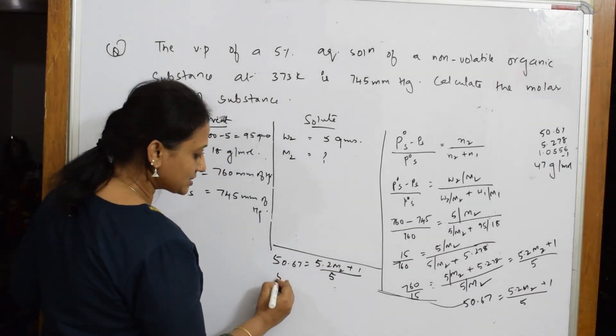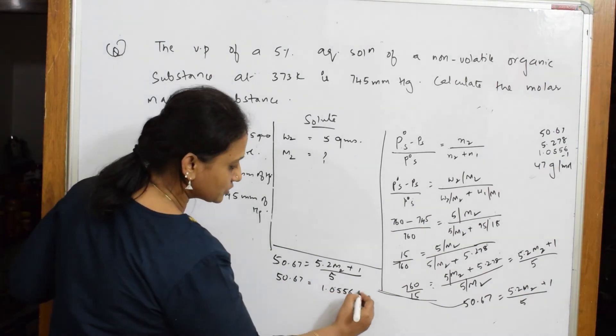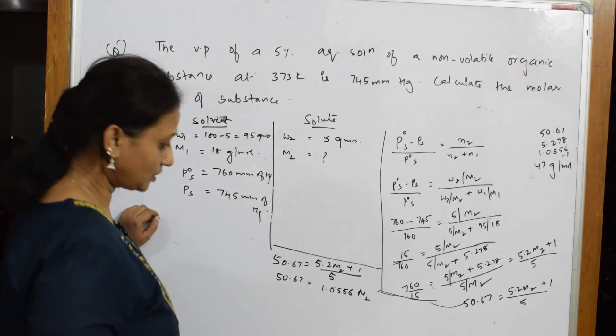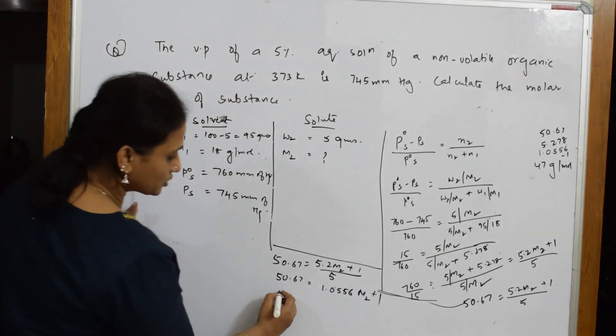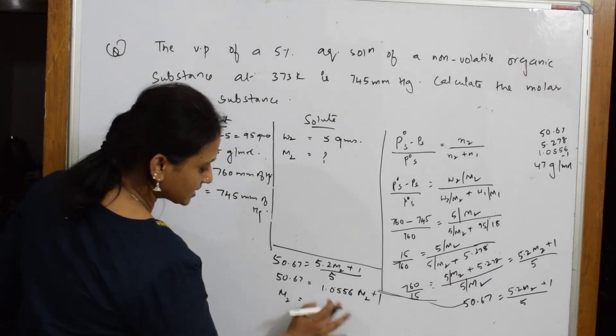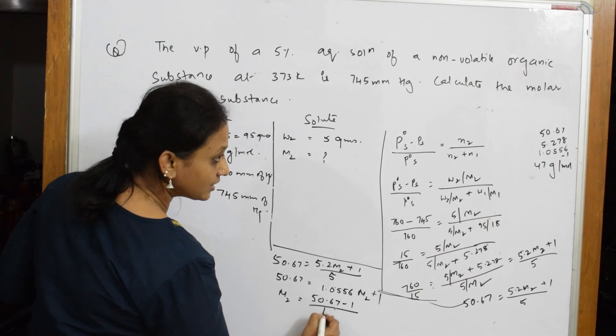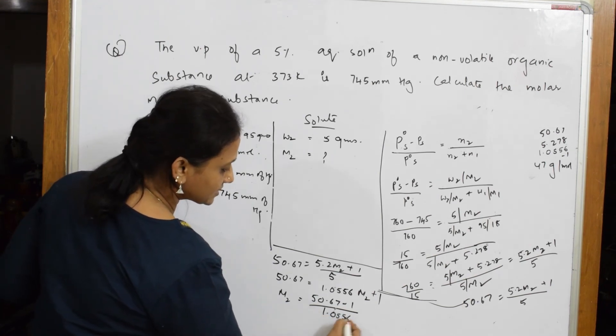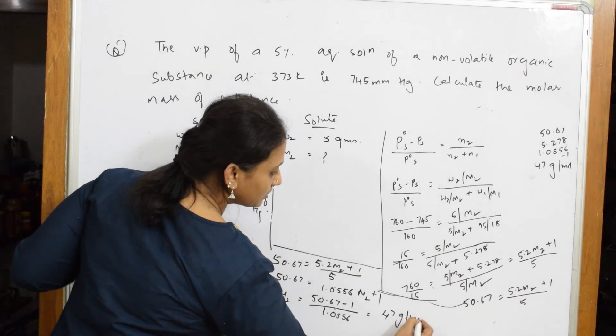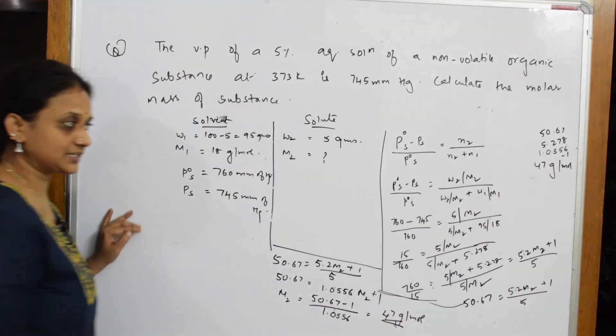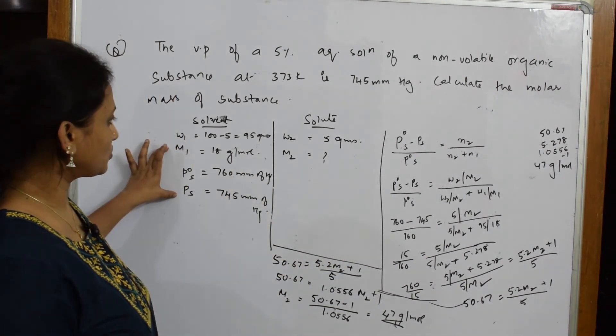Done. So m2 is equal to - this comes here - 50.67 minus 1 divided by 1.0556, which is equal to 47 gram per mole. That's it, so simple. I just wrote what is required, I wrote the formula, I substituted in the formula, then finally I've got the molecular mass is 47 gram per mole.